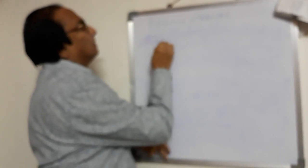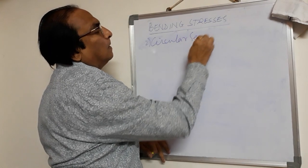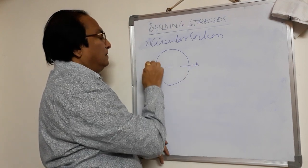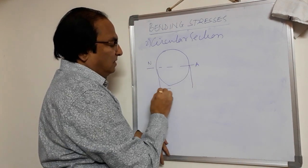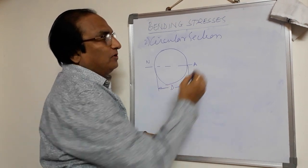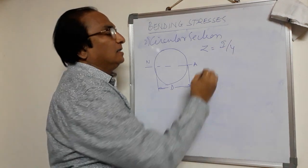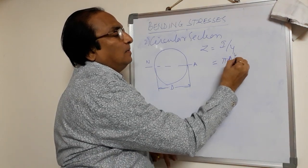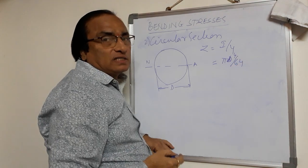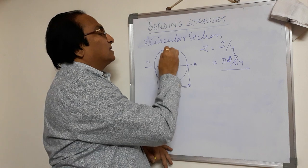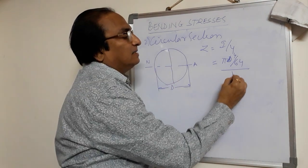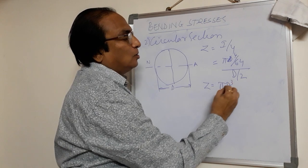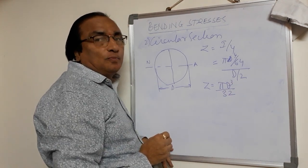For a circular section, we take the neutral axis at the centre with diameter D. Section modulus is given by I/Y. Moment of inertia of a circle is πD⁴/64. The distance of the extreme fibre from the neutral axis is the radius, which is D/2. So section modulus for a circular section is πD³/32.